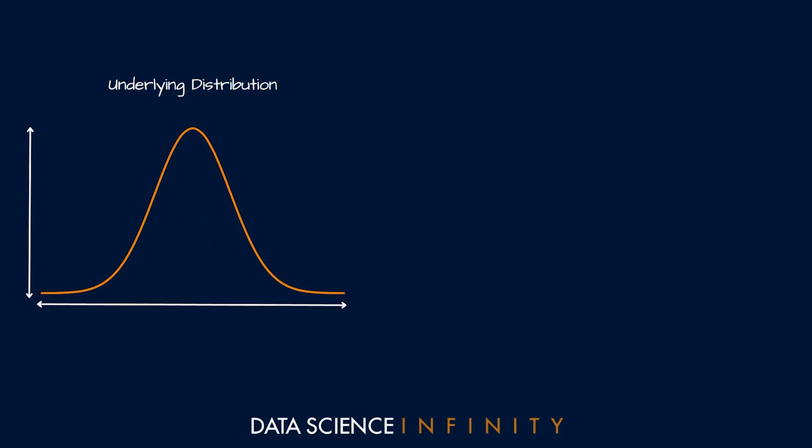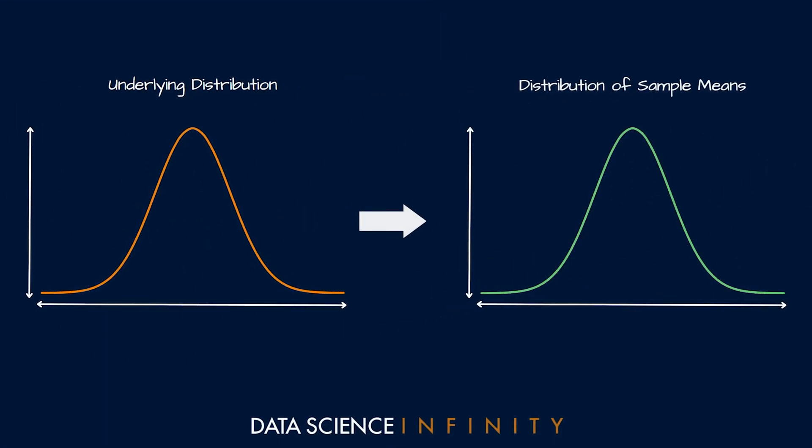Something important to note is that none of this is to say that the full population — the heights of all men in the US — is definitely normally distributed. We don't know the actual distribution of that full population, and that's the reason we're sampling in the first place. This is what makes the central limit theorem so interesting: it doesn't matter what the underlying distribution is. The distribution of the sample means will always tend towards a normal distribution, provided we collect enough samples.